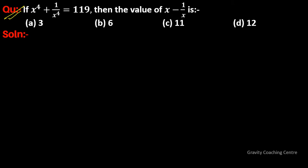Question: if x to the power 4 plus 1 upon x to the power 4 equals 119, then find the value of x minus 1 upon x.